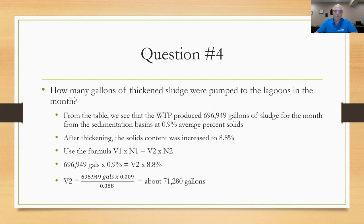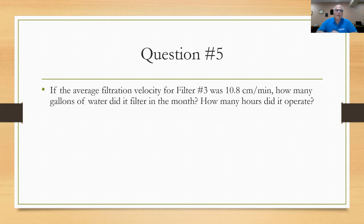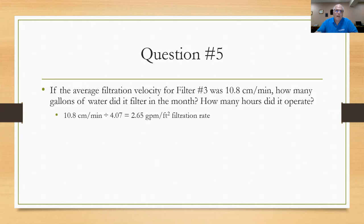Question number five asks: if the average filtration velocity for filter number three was 10.8 centimeters per minute, how many gallons of water did it filter in the month, and how many hours did it operate? The table did not give hours of operation for filter number three, so we need to derive it. Taking 10.8 cm/min ÷ 4.07 gives a filtration rate of 2.65 gallons per minute per square foot. From the table, the average unit filter run volume was 14,493 gallons per square foot per run, and filter number three was washed three times — implying three filter runs.